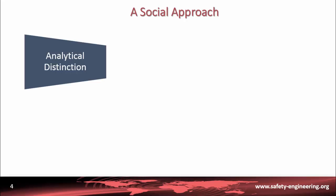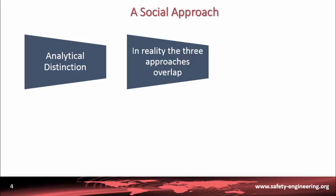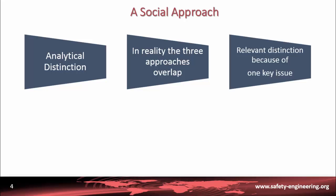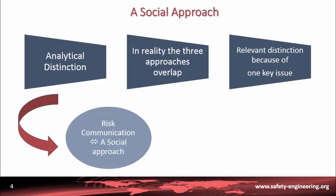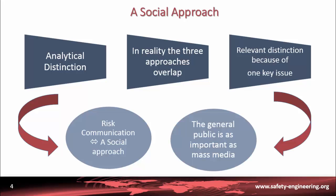This is just an analytical distinction — it is a theoretical distinction — because in the real world, in reality, the three approaches overlap. But the distinctions we have made are relevant because they allow us to understand one key issue: that risk communication is linked to a social approach, where two things are most important. The first is that the general public is relevant, and the second is that mass media play a key role.